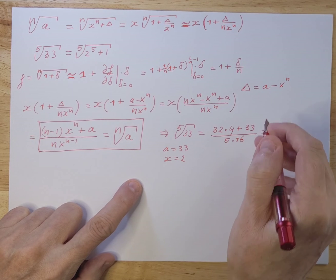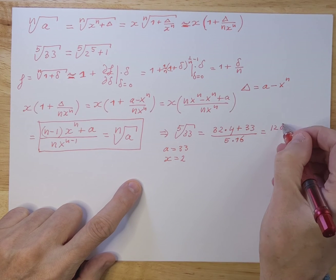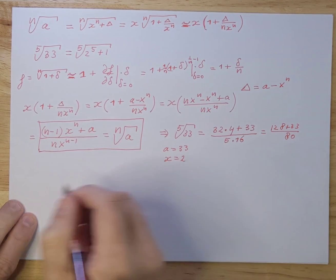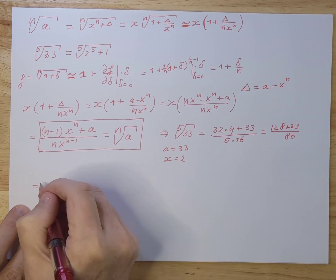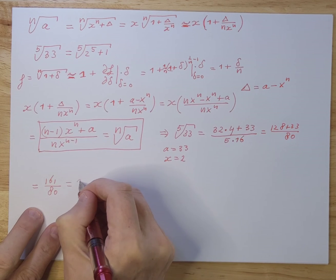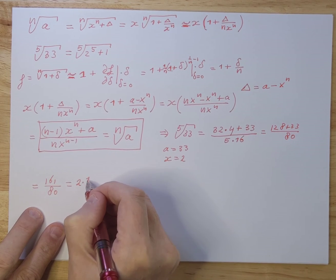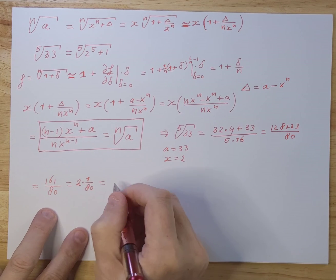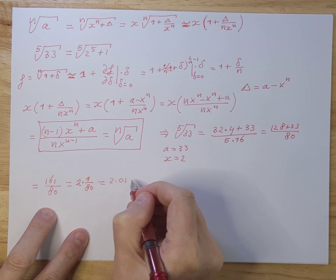So you do 32 times 4, that's 128, plus 33, divided by 80. And that is equal to 161 divided by 80, so that's 2, 1, 80th. And that is equal to 2.0125.